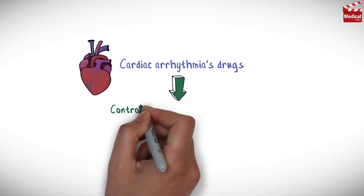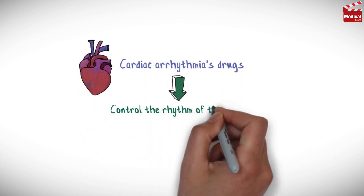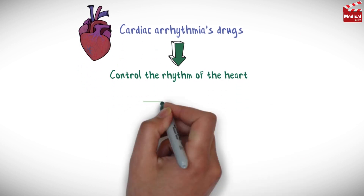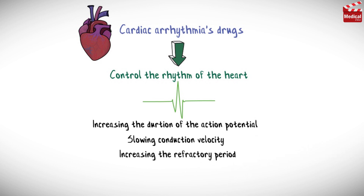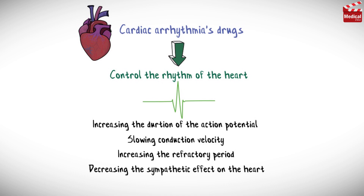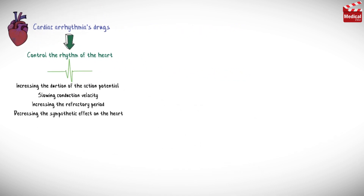The key in the treatment of cardiac arrhythmias is to control the heart rhythm. This is done by increasing the duration of the action potential, slowing conduction velocity, increasing the refractory period, or decreasing the sympathetic effect on the heart.